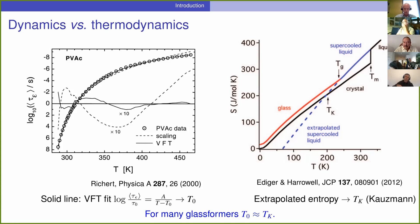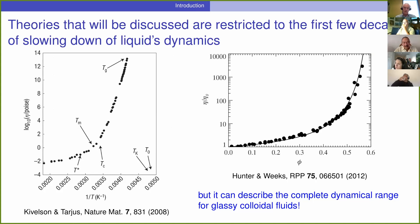I should start by acknowledging the drawback or problem with the theories I will be discussing. They are restricted to the first few decades of the slowing down, so we cannot really describe the whole dynamical range. This is in contrast to the theory presented in the first session of this symposium — Ken Schweitzer has a theory able to describe 12 to 15 orders of magnitude of change in viscosity. What we are trying to do is develop theories with other advantages, but these theories are restricted to the vicinity of the so-called critical temperature, which is more or less the same as the mode coupling temperature. Still, these theories can describe the complete dynamical range of behavior in classic colloidal fluids.